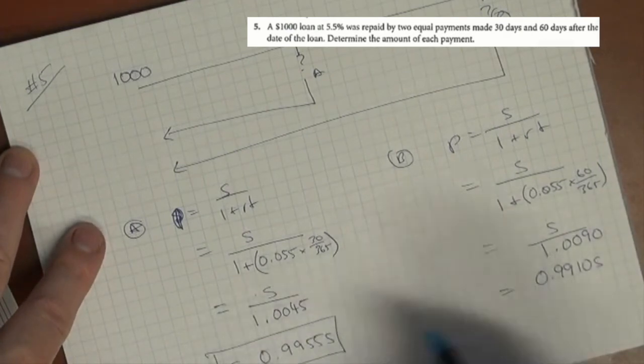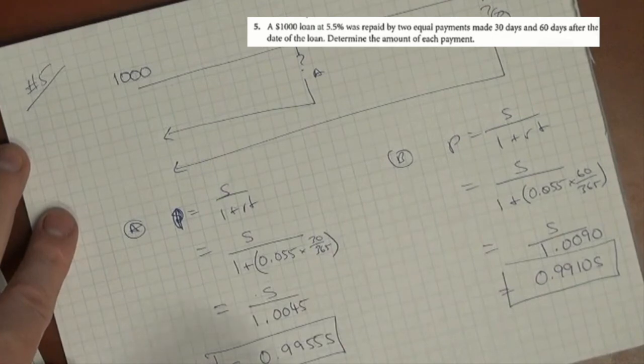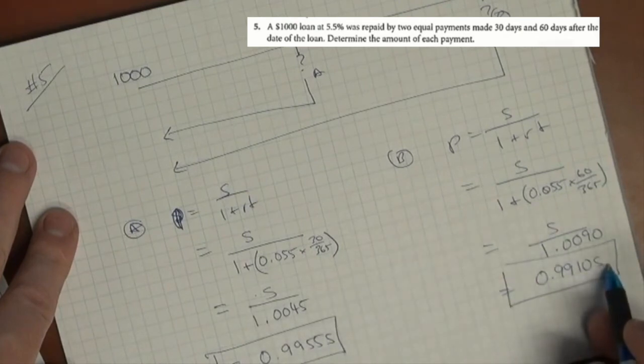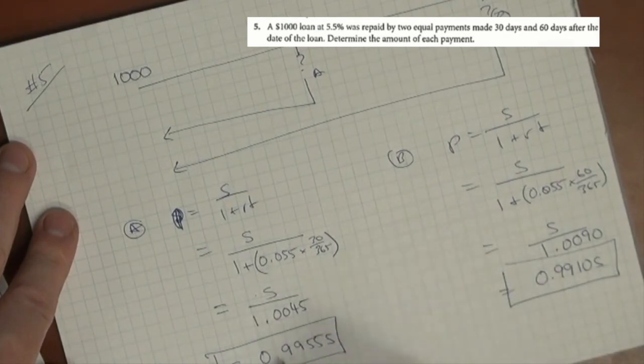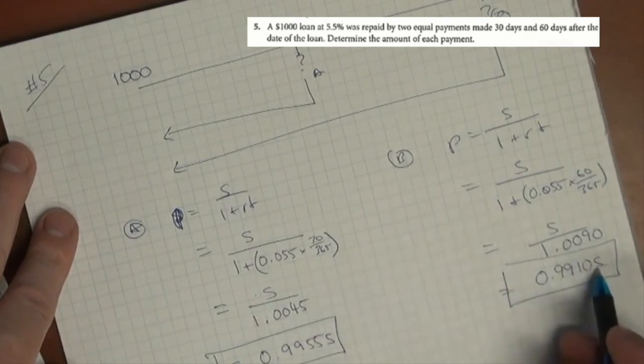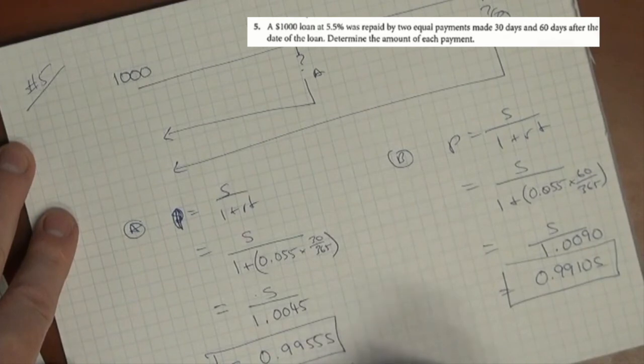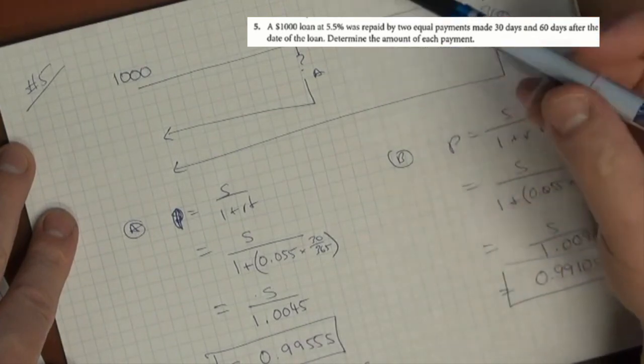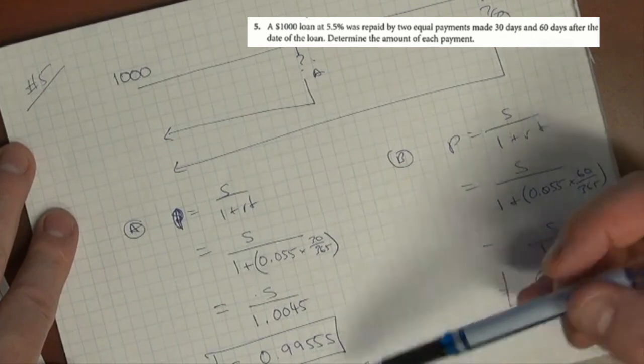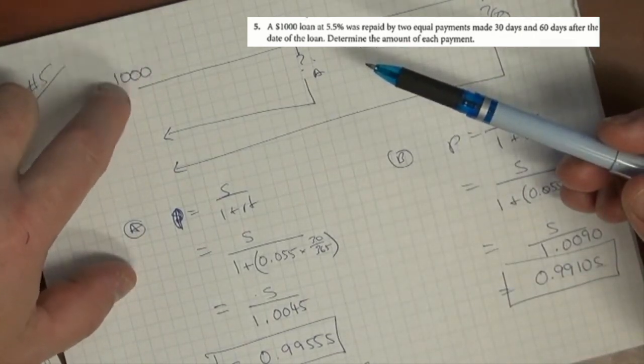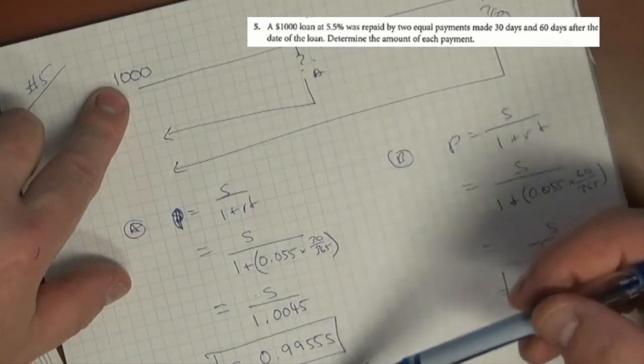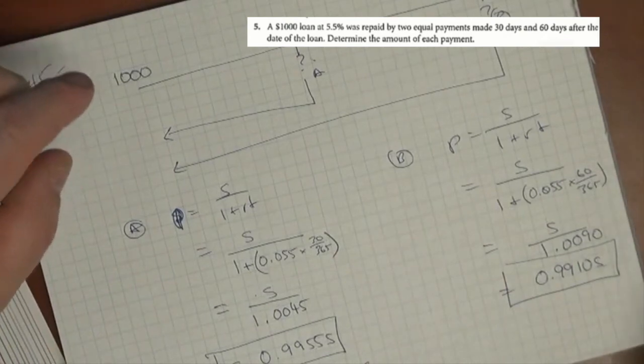So essentially we've got two of these and we're going to make them equal to $1000. We add them up: $1000 equals 0.9955 plus 0.9910, which equals 1.9866S. We do a simple division and S is $503.39. So each payment is $503.39 - two payments of $503.39, which is a little more than $1000. That makes sense because $1000 is borrowed and as time goes by, interest will accumulate on it.